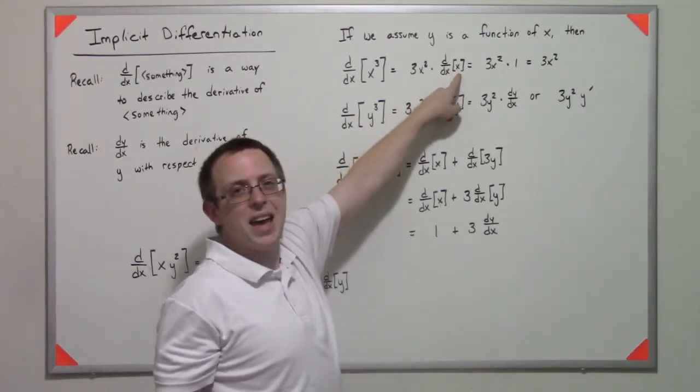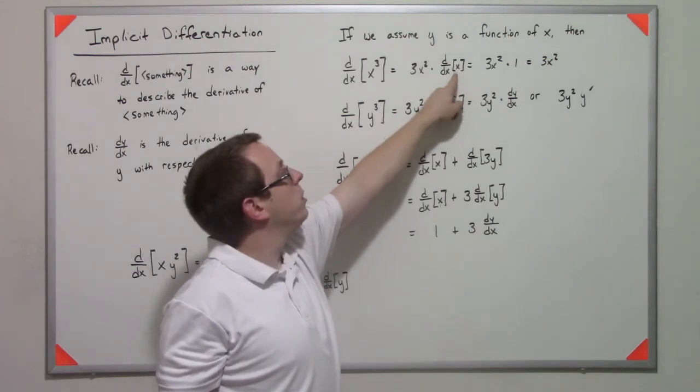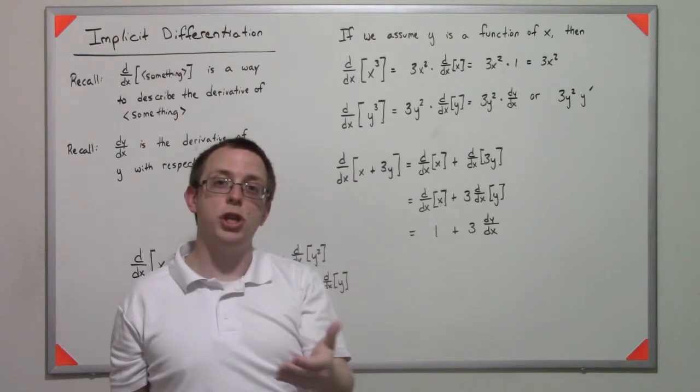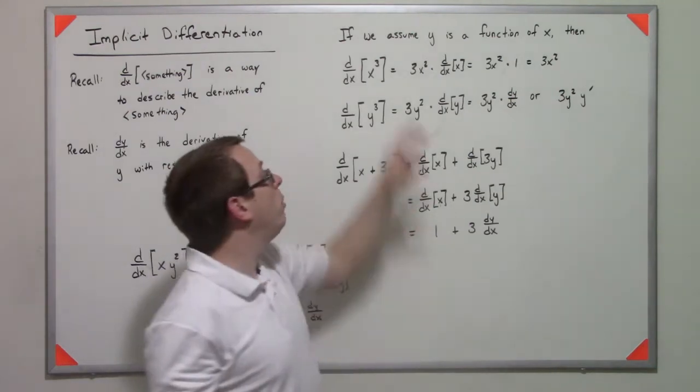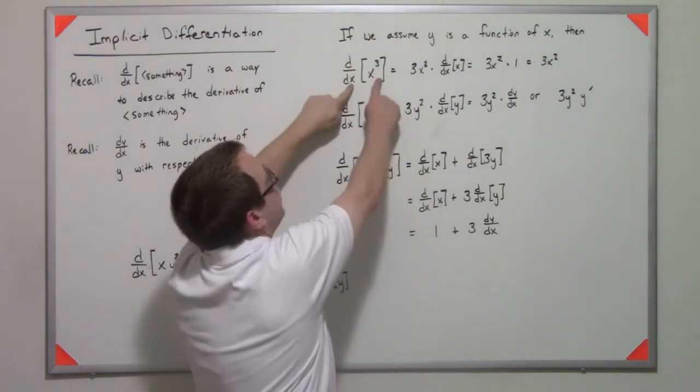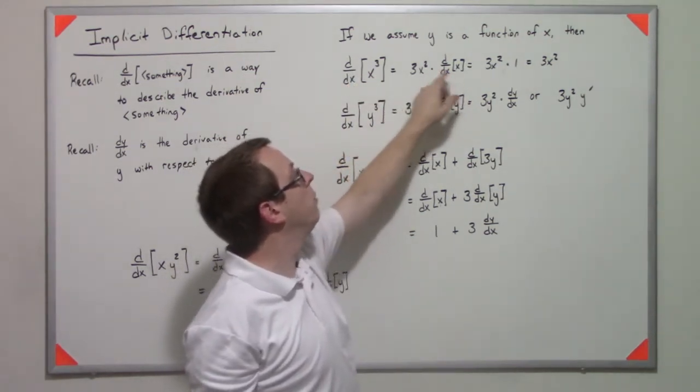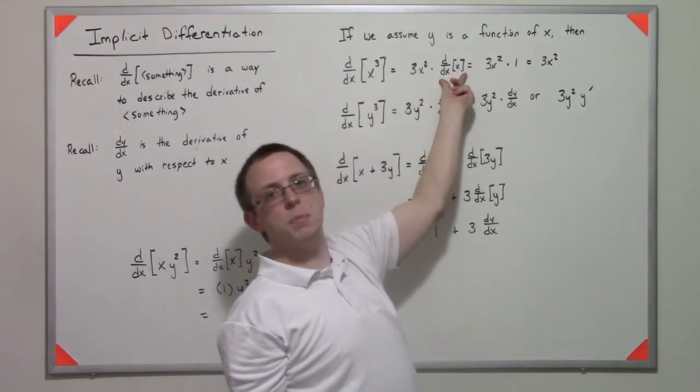But the derivative of x with respect to itself is just one, so we don't generally consider that when we're dealing with these. We just usually write this term, but technically speaking that comes through as a chain rule result.